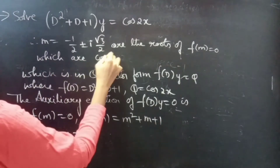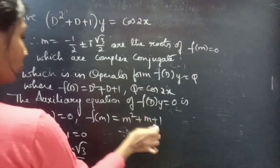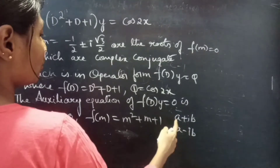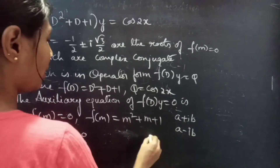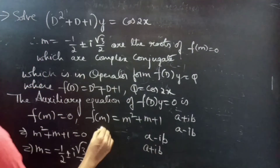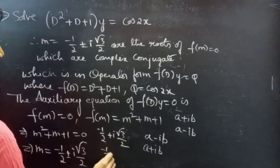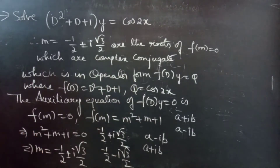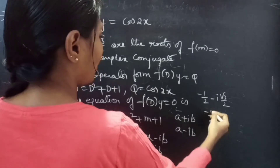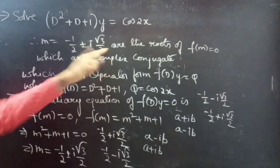If you consider a complex number a + ib, then its conjugate is a − ib. And if you consider a − ib, then its conjugate is a + ib. Likewise, if you consider −1/2 + i·(√3/2), then the conjugate of this complex number will be −1/2 − i·(√3/2), and vice versa. So we call −1/2 ± i·(√3/2) complex conjugate roots.